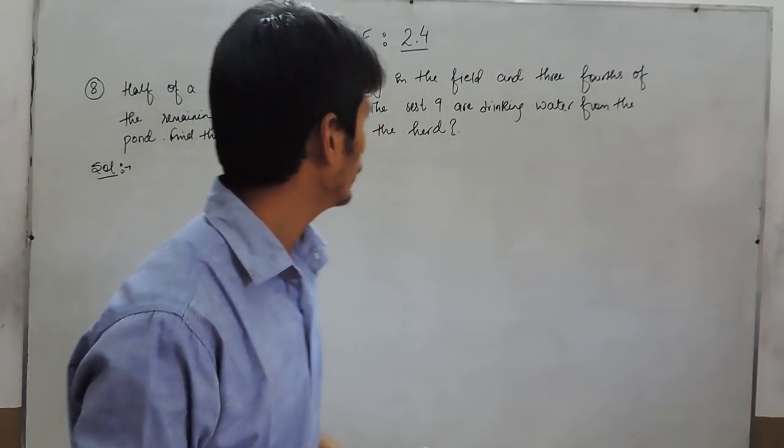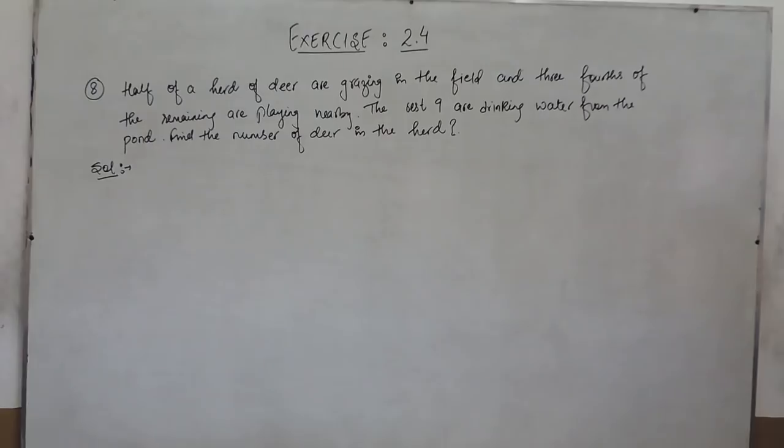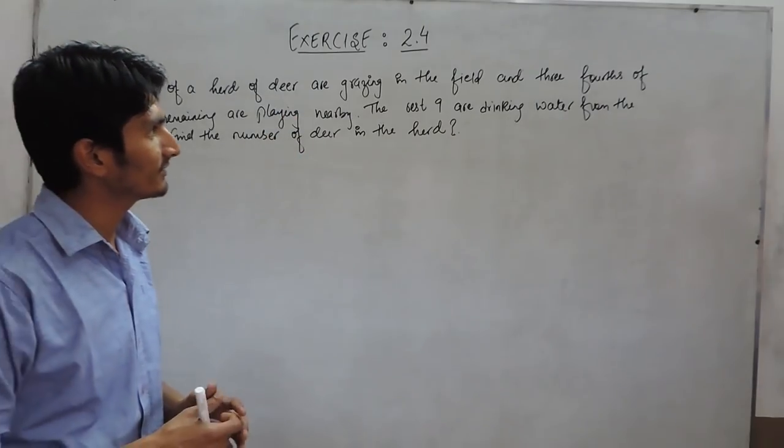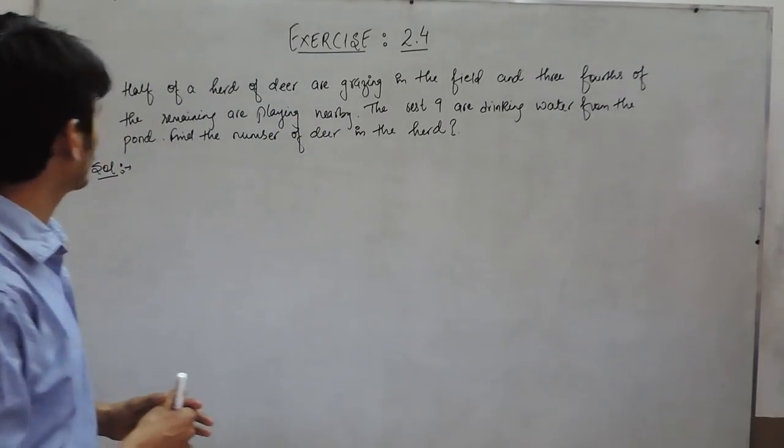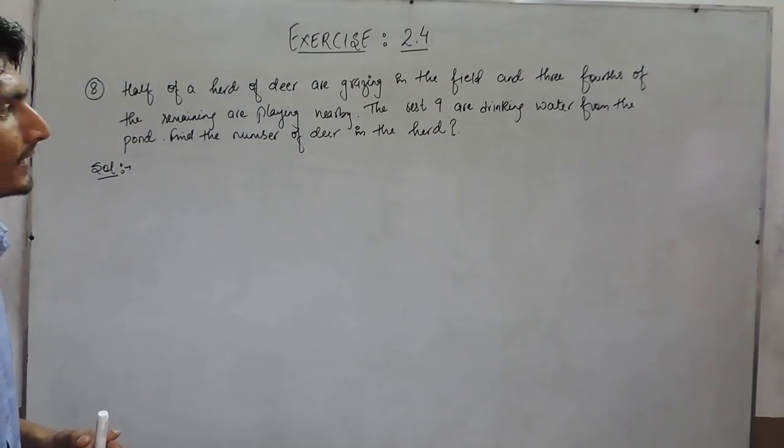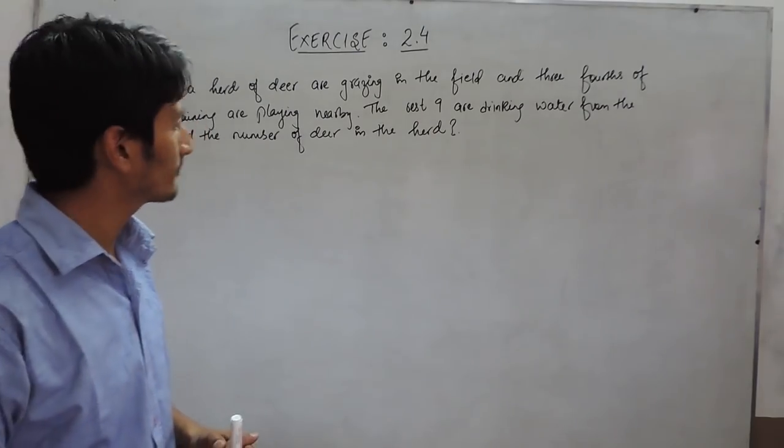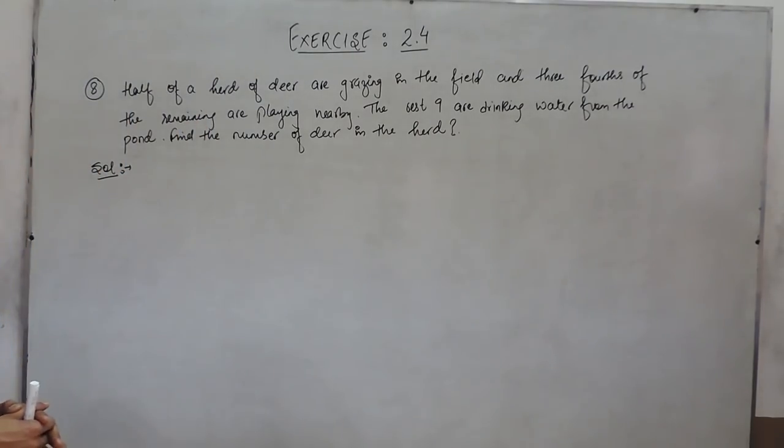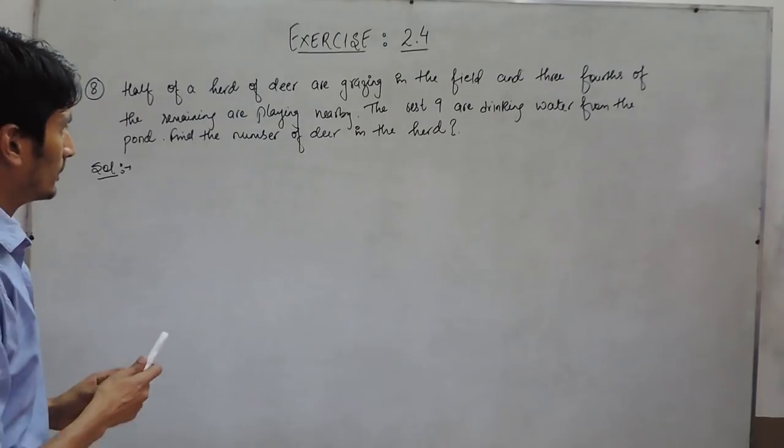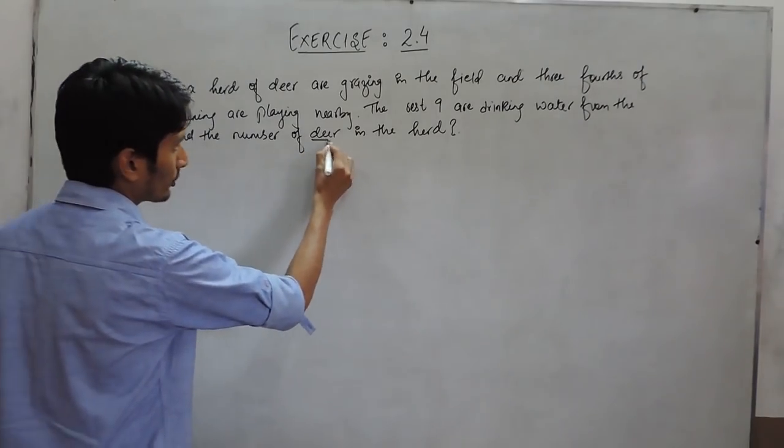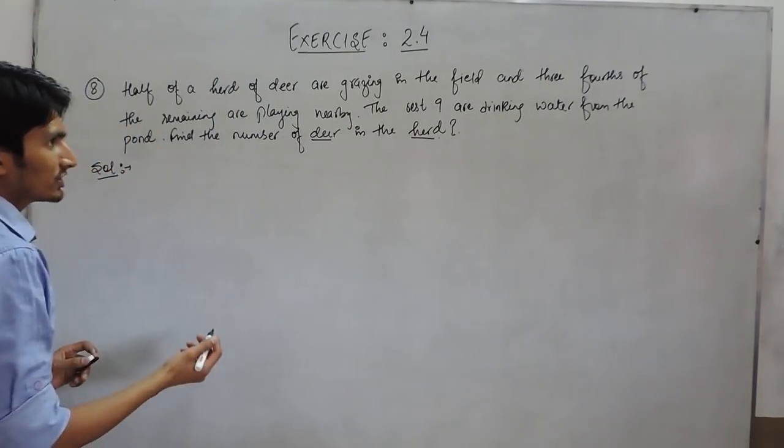Hello everyone, in this video we are going to solve question number 8. It is given that half of a herd of deer are grazing in the field and 3/4th of the remaining are playing nearby. The rest 9 are drinking water from the pond. Find the number of deer in the herd.